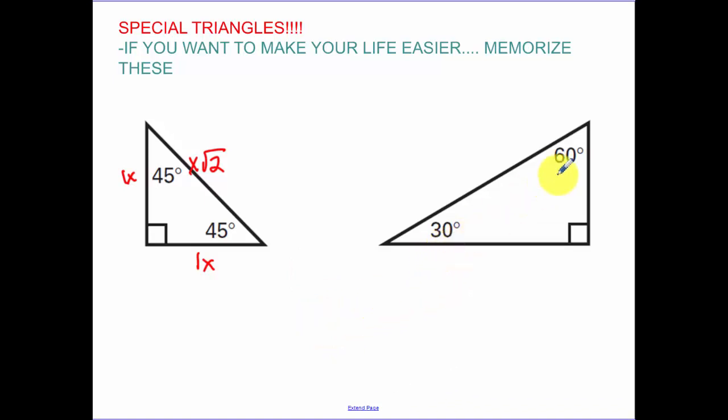For a 30, 60, 90 triangle, it's as easy as 1, 2, root 3. Now the largest of these three numbers is 2. That goes on our longest side, which is our hypotenuse. Between 1 and root 3, 1 is the smallest, so that goes opposite the smallest, which is our 30 degree side, and 60 is our root 3 side.